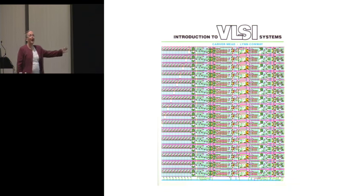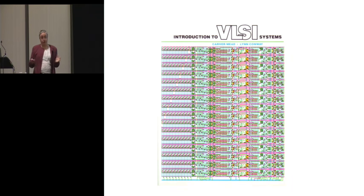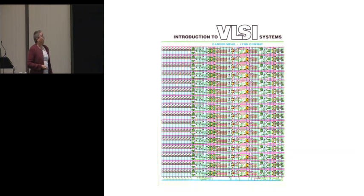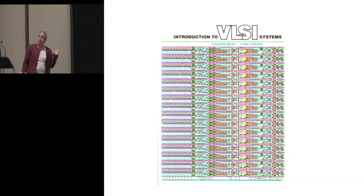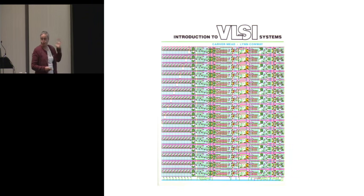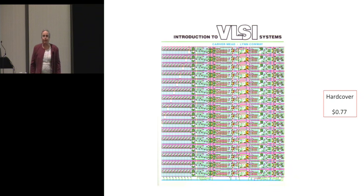Meade and Conway is a fantastic book from 1980 about how to do VLSI design. VLSI stands for very large scale integration. It opened up circuit design to normal people like computer scientists — it took it away from the priesthood. It has more than 4,000 citations, it started an industry, and it's the basis on which Intel and MIPS were built. I looked on Amazon last week and discovered you can buy it for 77 cents.